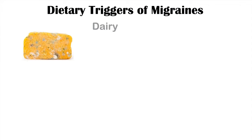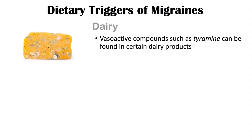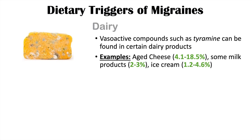Dairy is another dietary trigger of migraines, as vasoactive compounds such as tyramine can be found in certain dairy products. Between 4.1% and 18.5% of patients report aged cheese as a trigger, 2% to 3% report some milk products, and approximately 1.2% to 4.6% report ice cream as a trigger.